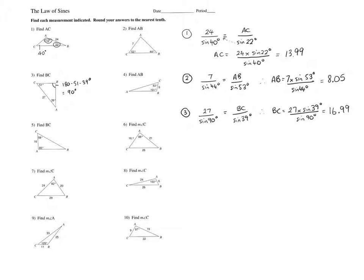Question three. BC is 16.99. You notice that angle B is 90 degrees.